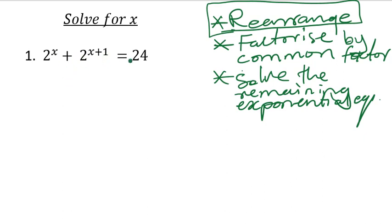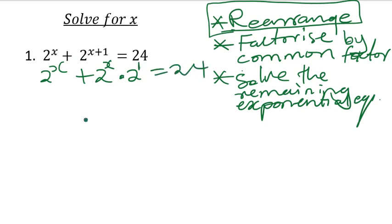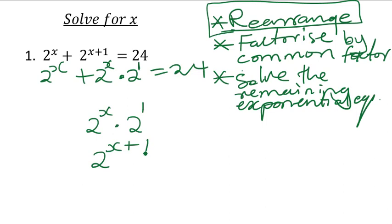In this case everything is good, we can straight away start. Let's go through this problem: we have 2^x plus 2^x multiplied by 2^1, which gives us 2^(x+1). Basically what is happening here is that we are multiplying the same bases, so it means we need to add the exponents, giving us 2^(x+1). If you do a reverse, this is what you are going to have.